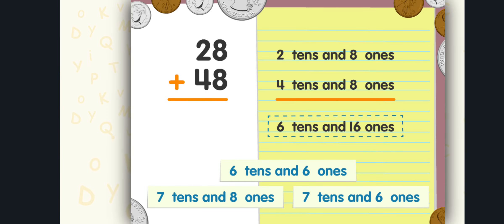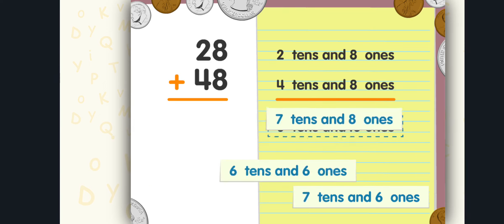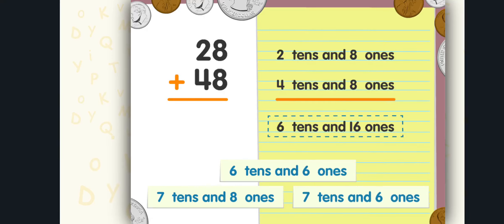Two tens and eight ones plus four tens and eight ones equals six tens and sixteen ones. Nice try! That's right! The sum is seventy-six.